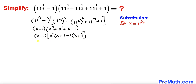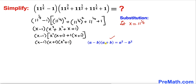Now x plus 1 is common, so we factor it out to get: (x minus 1)(x plus 1)(x squared plus 1). Let's recall the identity a minus b times a plus b. Applying it to the first two factors gives us x squared minus 1, times x squared plus 1.